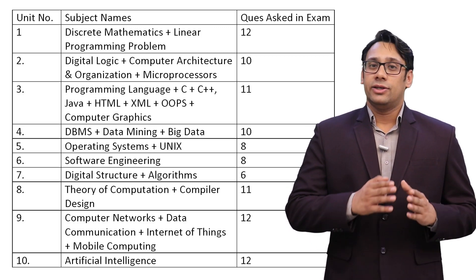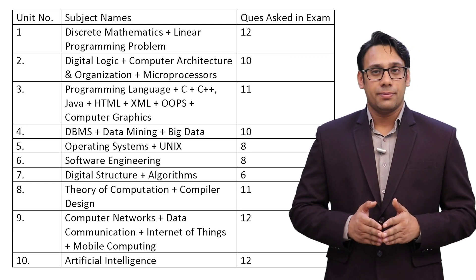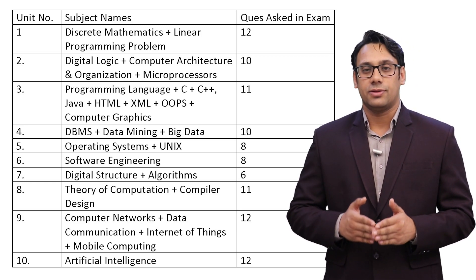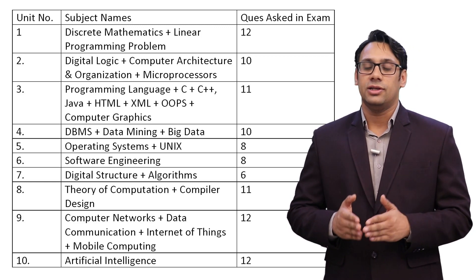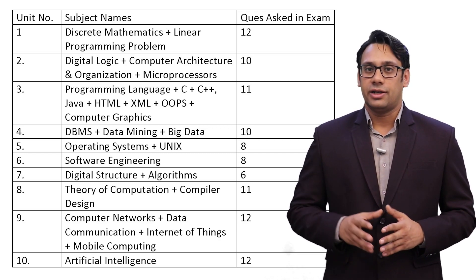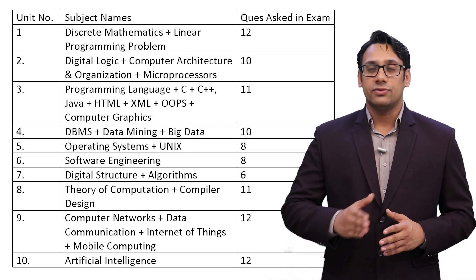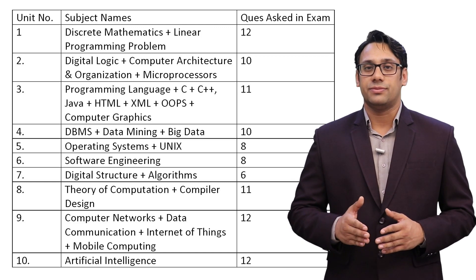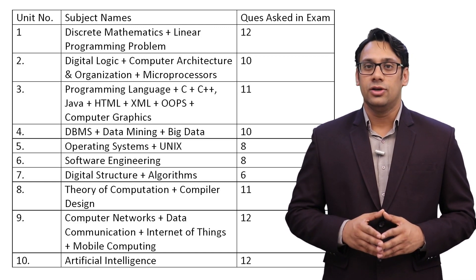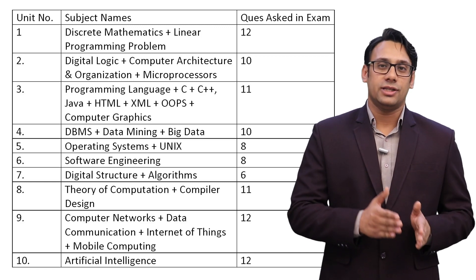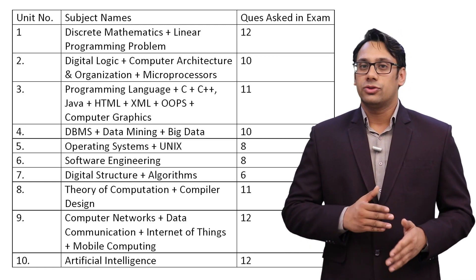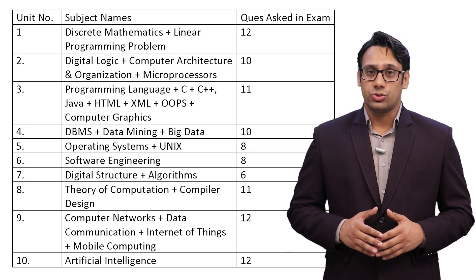Unit 2 is Digital Logic, Computer Architecture and Organization, and Microprocessor — a total of 10 questions from this unit. Out of these three subjects, they have not asked anything from Microprocessor this year. So both Digital Logic and Computer Architecture and Organization become very important — you cannot leave these two subjects.